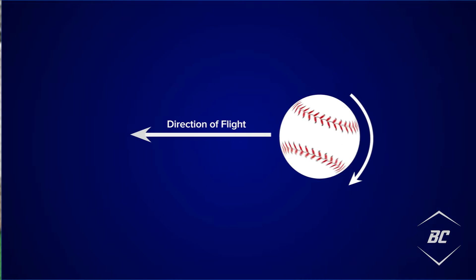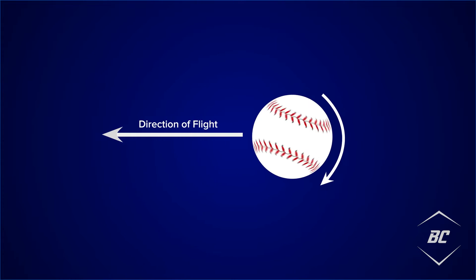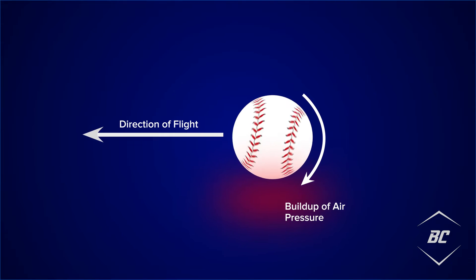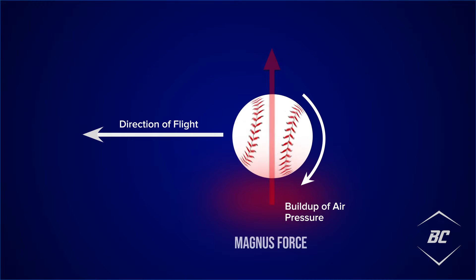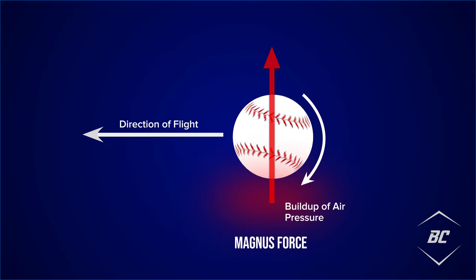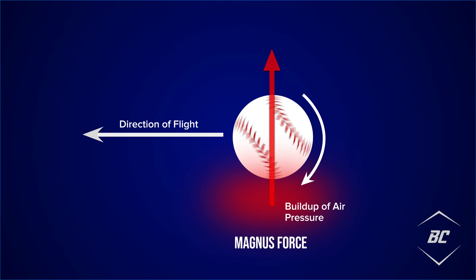We know that fastballs are released with backspin as they travel toward home plate. Magnus force is the air pressure built up below the baseball, which counteracts the gravitational forces pushing downward, allowing the ball to drop slower, which can give the impression of rise. Keep in mind, the greater the spin rate, the more impact Magnus force can potentially have. This might explain why high spinning fastballs are sought after, because this trait can lead to greater movement profiles.